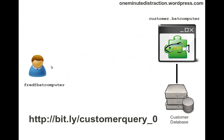Hi, welcome to another screencast on developing XMPP applications with the Volpal framework. This screencast is a continuation of a previous screencast shown at this URL. Just to recap, in that screencast I developed an application that allows a client to query a database, and this is how it works.